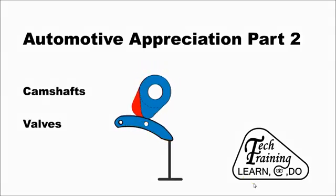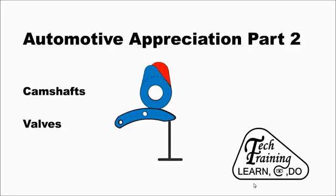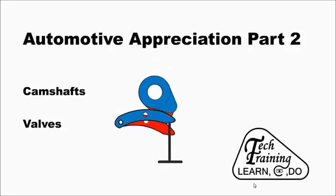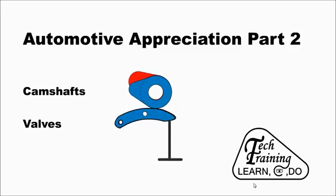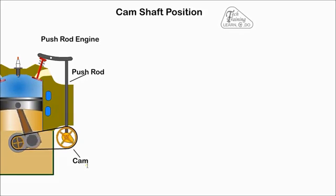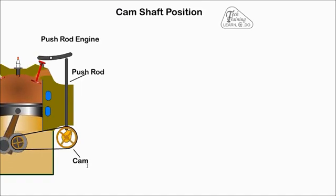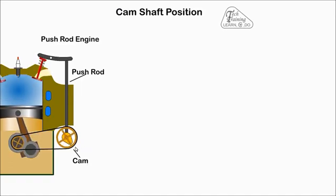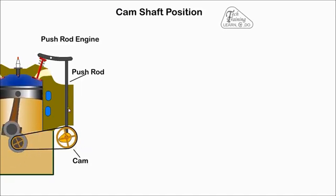Hi, welcome to Automotive Appreciation Part 2. In this section we will cover camshafts and valves. There are various layouts for the camshafts. Early engines had the camshaft at the bottom of the engine. The valves were operated by push rods via rocker arms, hence the name push rod engine.